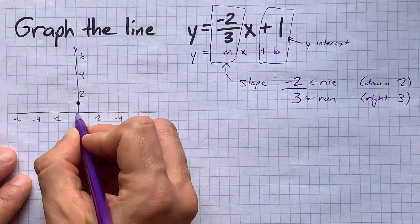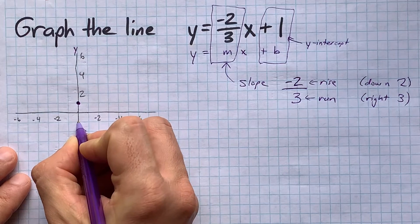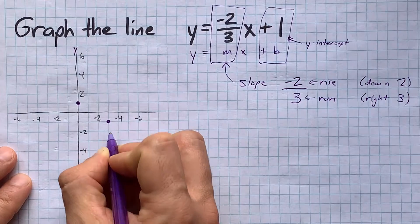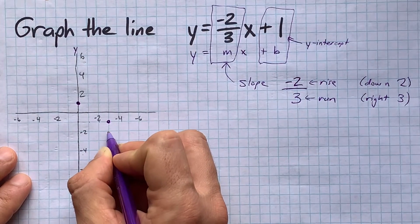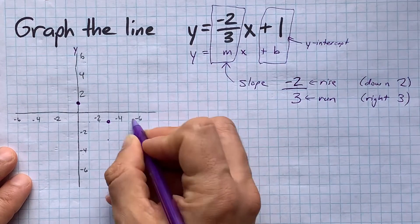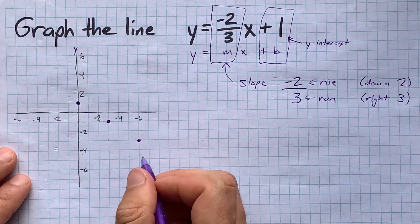I'm going to start here and go down one, two, and then I'm going to go right three, one, two, three. Put a dot there. From that point, we do the same thing. Down one, two. Right one, two, three. Now I've reached the end of my grid here, so I'm going to end there.